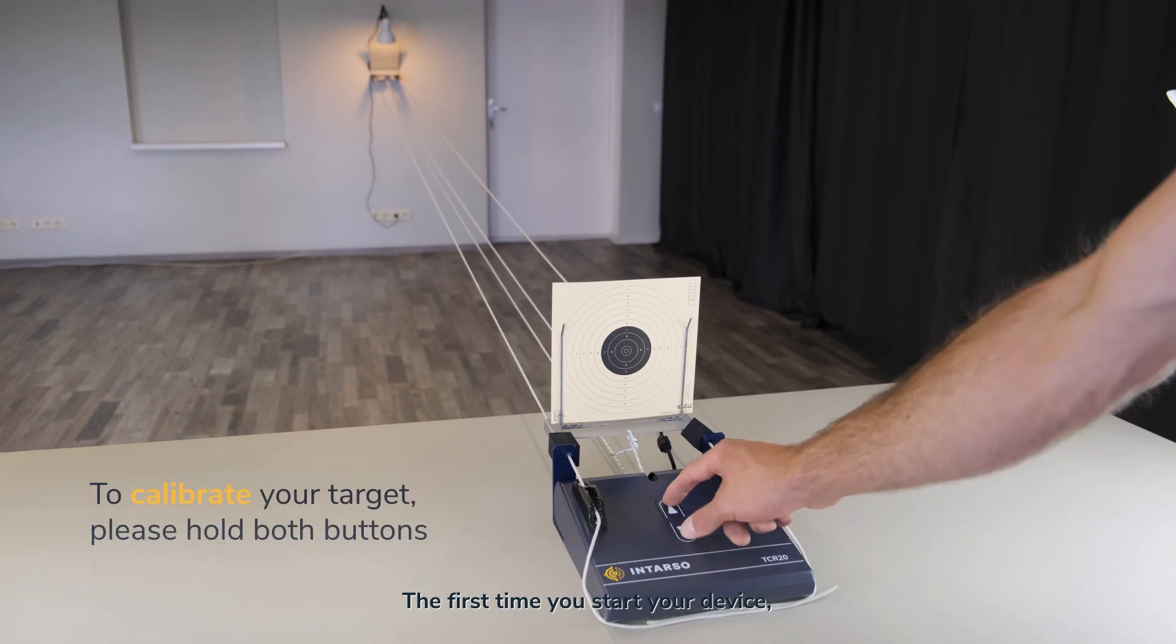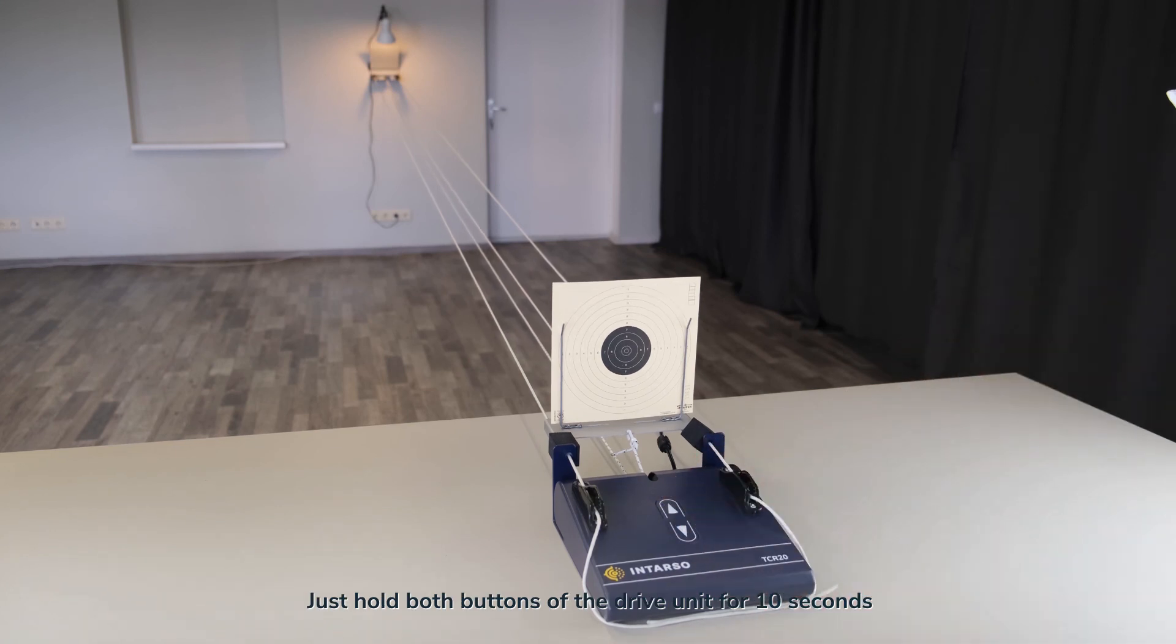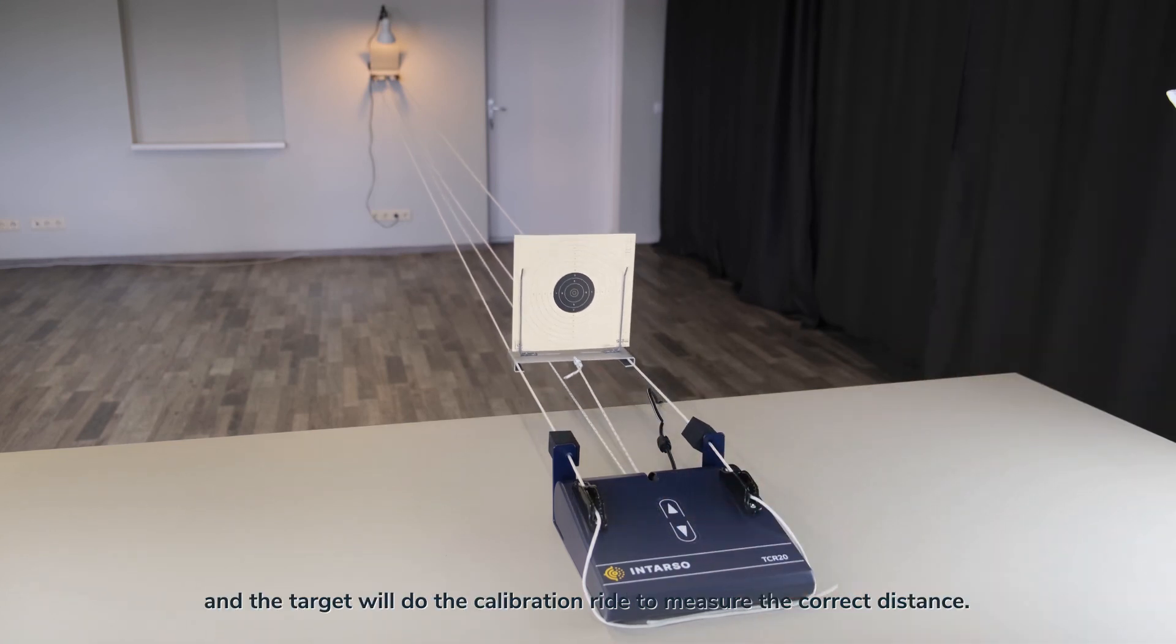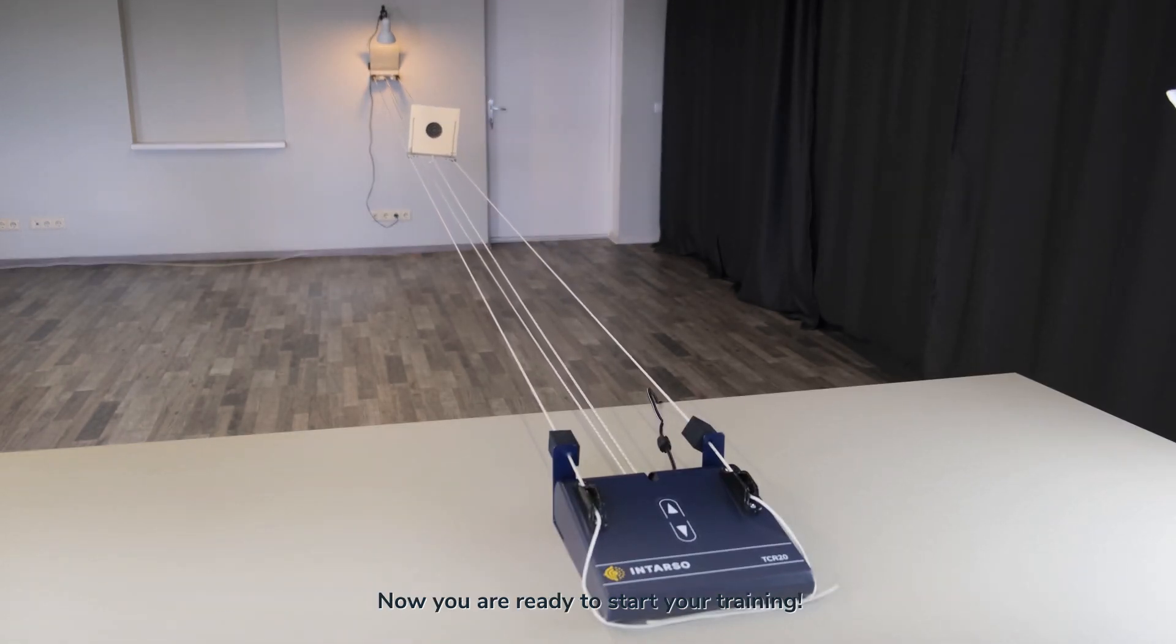The first time you start your device, you will need to perform the automatic calibration. Just hold both buttons of the drive unit for 10 seconds and the target will do the calibration ride to measure the correct distance. Now, you are ready to start your training.